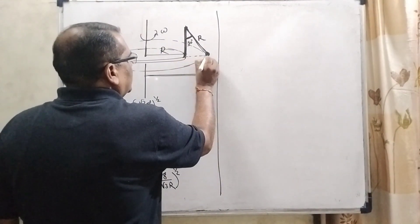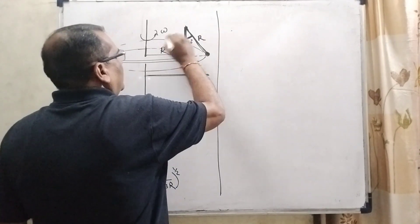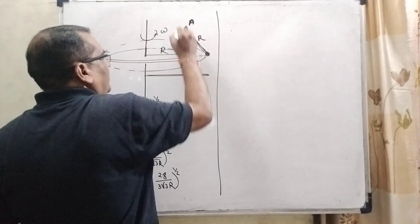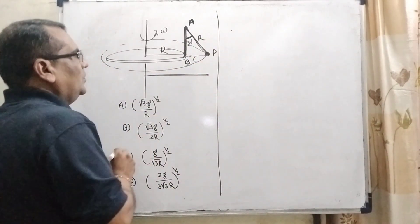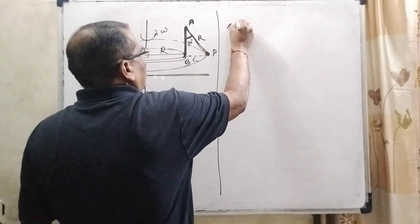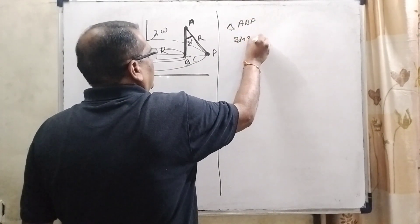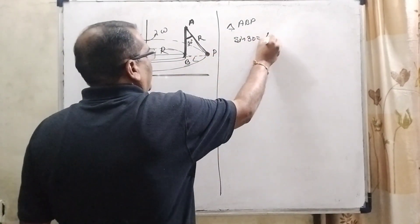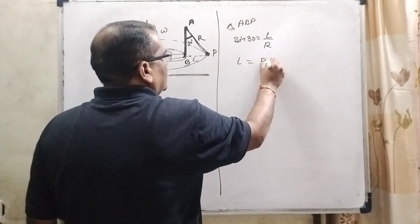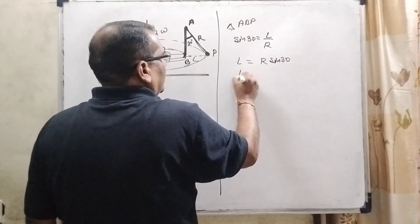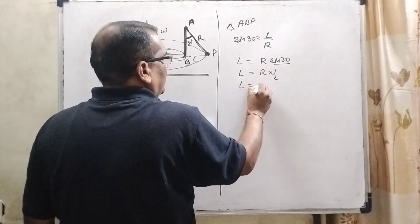Now consider this length is L. Then in triangle, let us suppose we have to label of this rod AB and this point is considered P. In triangle ABP sin 30 equal to perpendicular L and radius is R. So, here L equal to R sin 30. So, here R sin 30 is 1 by 2. So, L equal to R by 2.